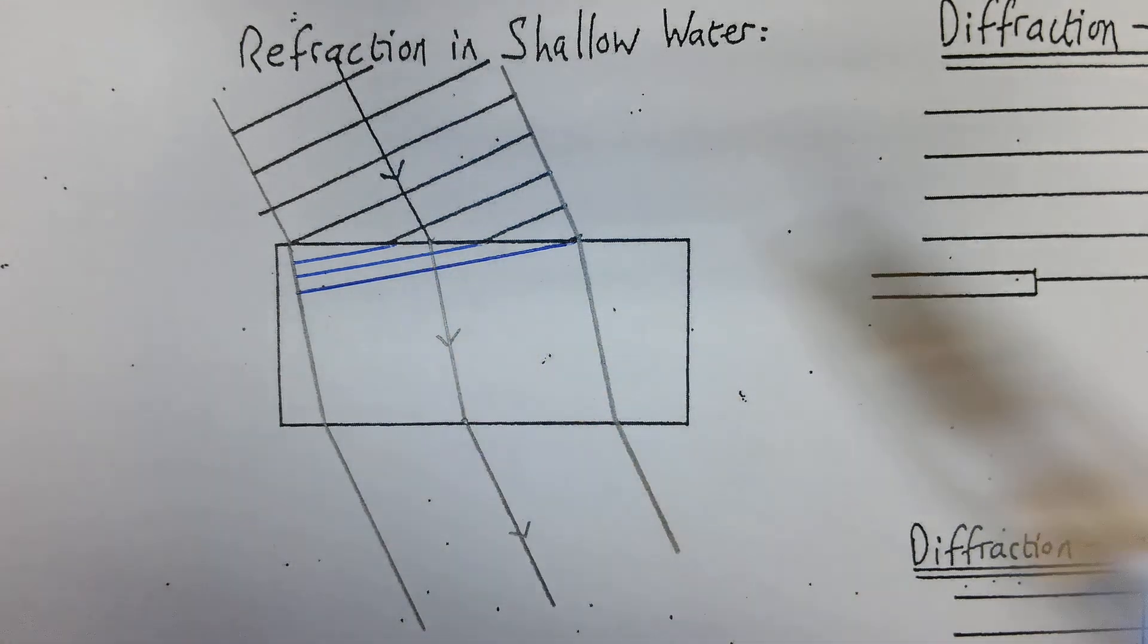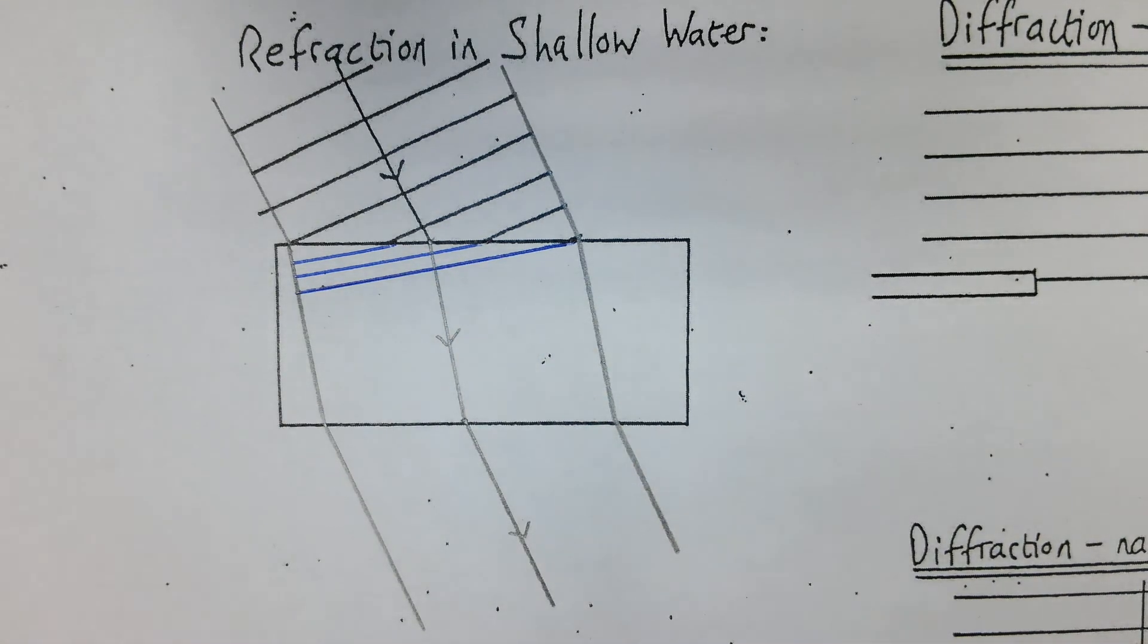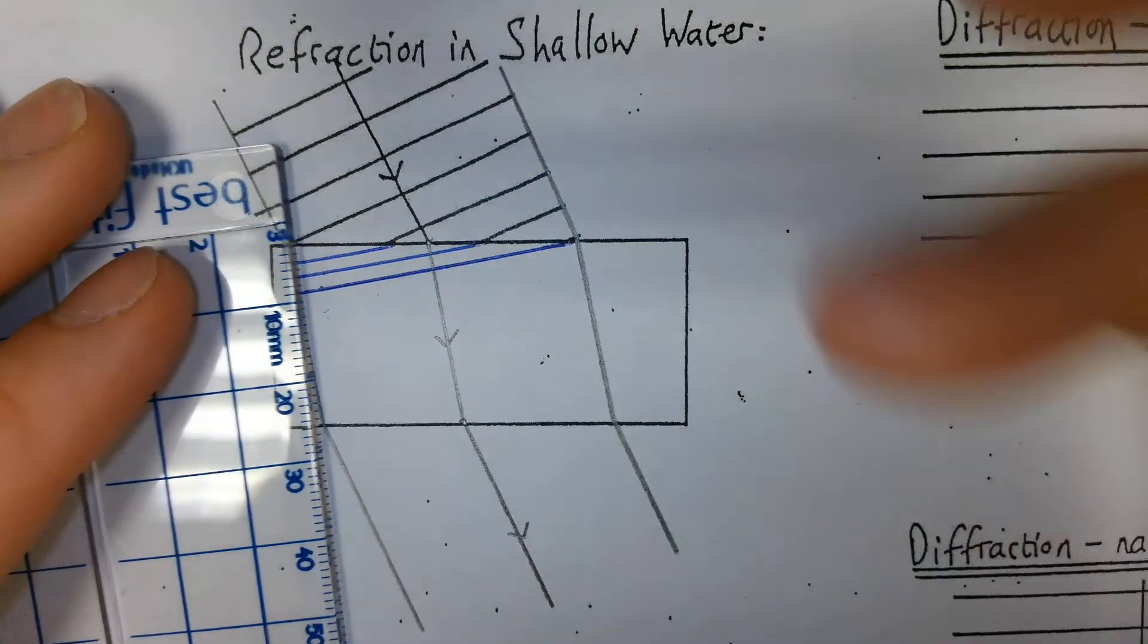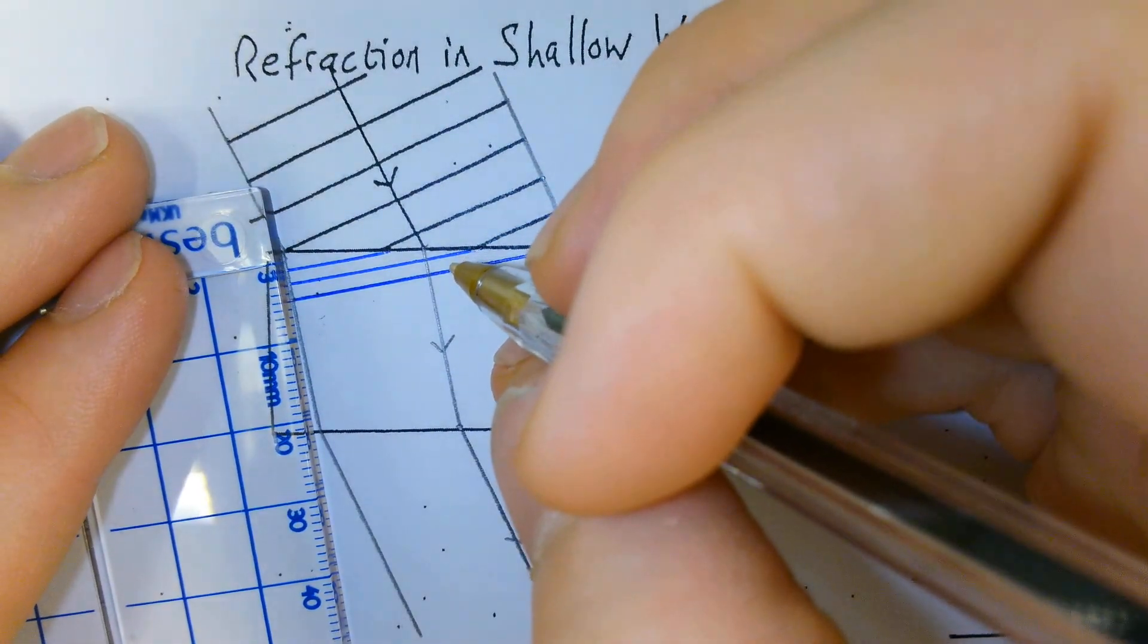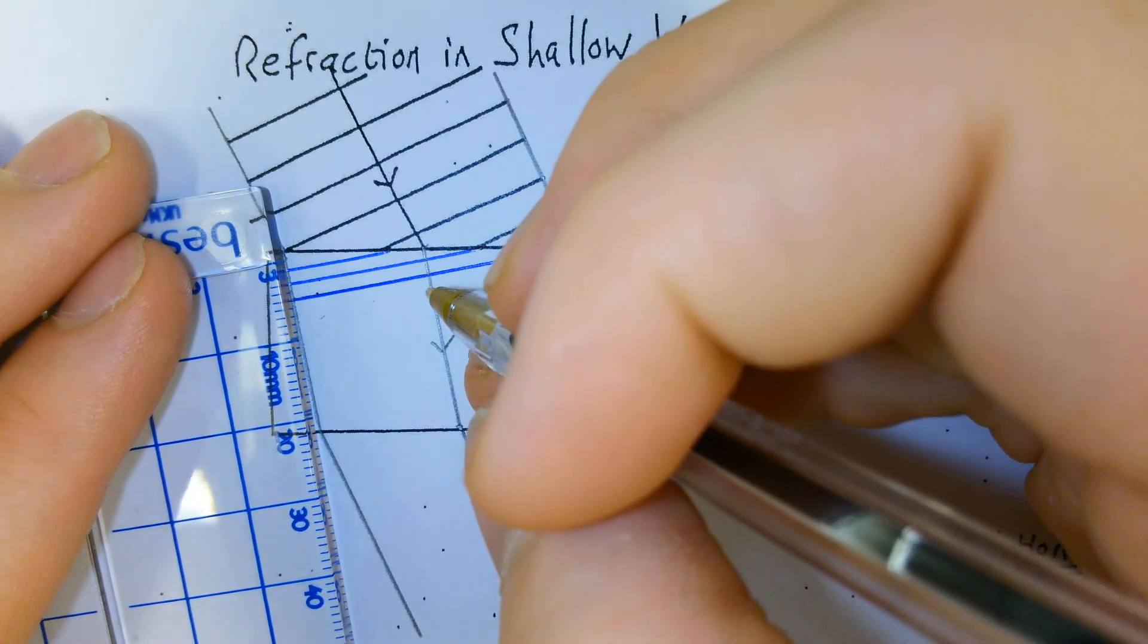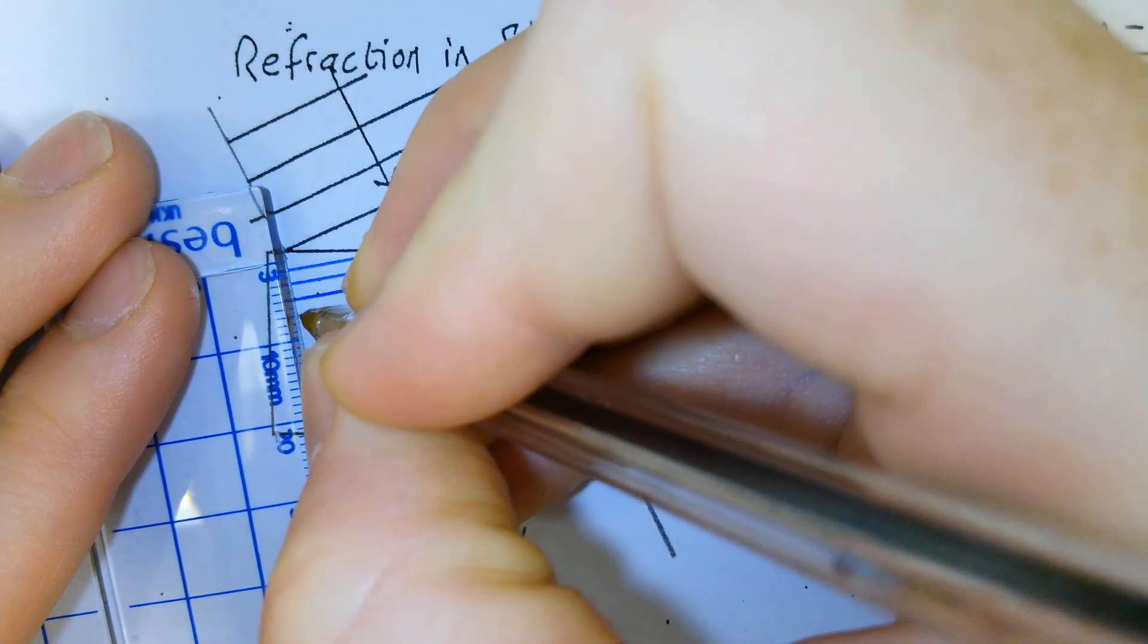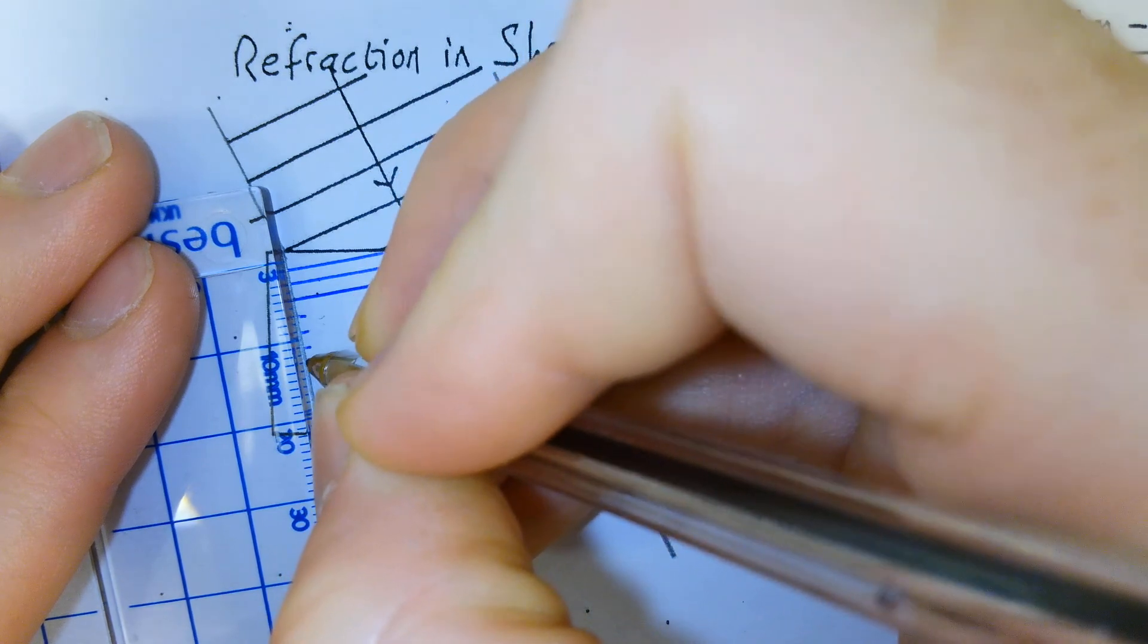So, in this case, the wavelength has changed. Now, what I'm going to do, I'm going to measure how many millimeters that is. So, that's two millimeters apart. And I'm going to mark every two in here.